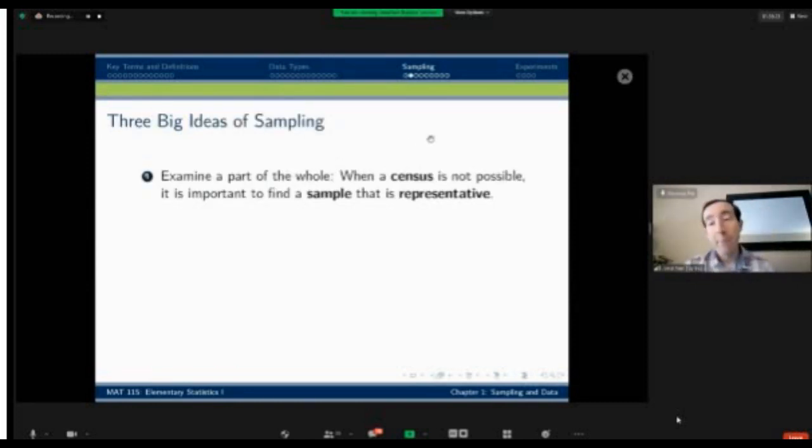There's three big ideas to keep in mind whenever you're constructing a sample. This is actually a philosophy that I've been trained in from previous statistics work. When you're working with a sample, the key thing is to think we're looking at a part of the whole. So since this is impossible, we want to find a sample, but we want that sample to be representative.